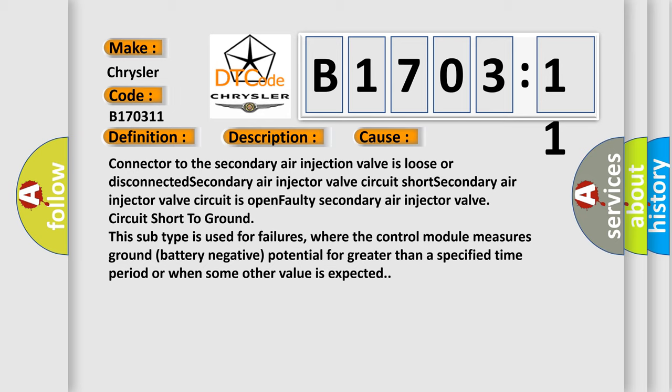This subtype is used for failures where the control module measures ground battery negative potential for greater than a specified time period or when some other value is expected.